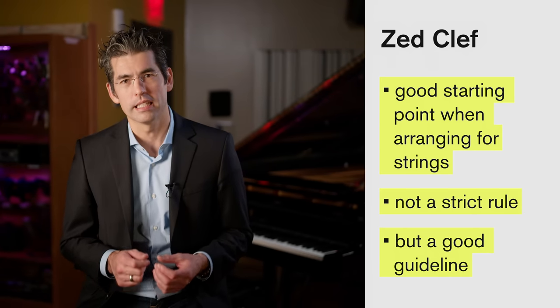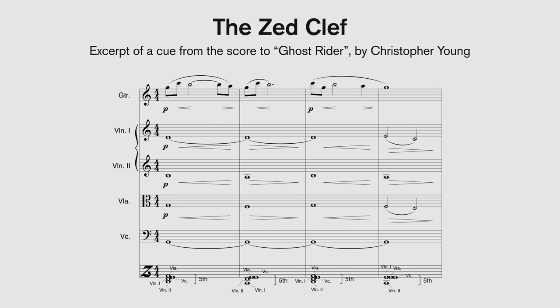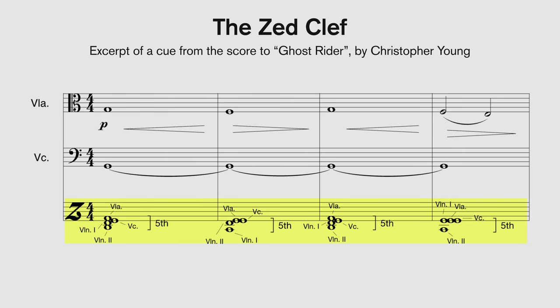Now let's take a look at the next example, which provides some musical context to better understand the Z-clef. This is a cue from Christopher Young's score to Ghost Rider. The strings function as pads that support the nylon guitar lead line, voiced below the guitar melody so as not to compete with it in terms of range. The first four bars of the strings — the downbeats only — are plotted on the Z-clef below the cellos. Notice how the voicing is clustered within a fifth. Let's have a listen.